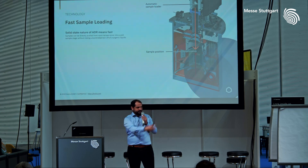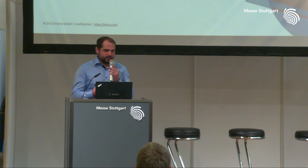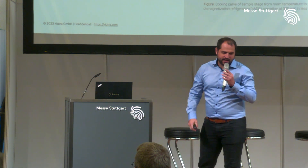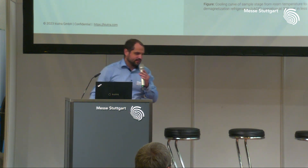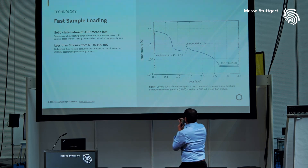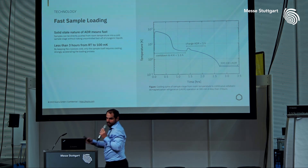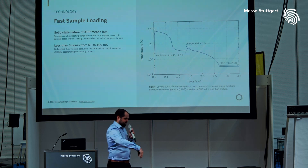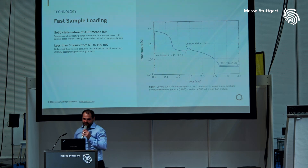We use sample pucks — I can show you later if you're interested at our booth — where samples can be loaded and then simply inserted into the cryostat. From there, the cooling process starts, and within less than three hours, a base temperature of 100 millikelvin can be reached. The puck thermalizes with the cryocooler to 4 Kelvin in about one to one-and-a-half hours, and then the ADR magnets are charged and the cooling process continues down to base temperature.